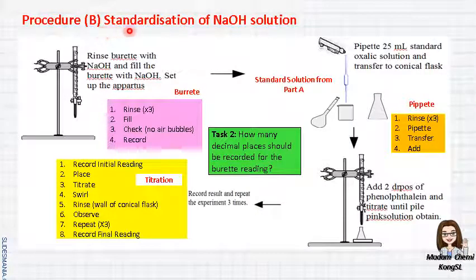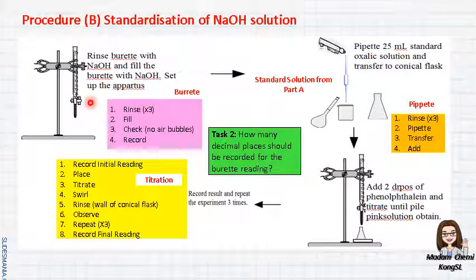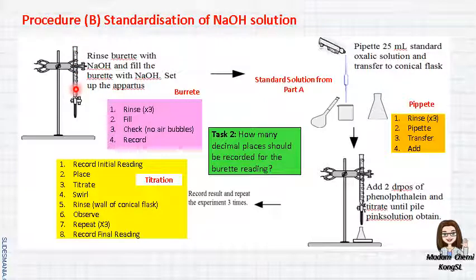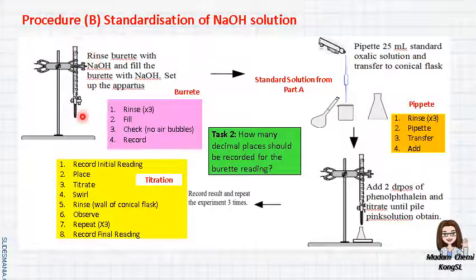Procedure B: standardization of sodium hydroxide solution. For this part, there are 10 steps from the lab manual. To summarize: first, make sure that you rinse the burette with three solutions — tap water, then distilled water, and then sodium hydroxide. After that, you fill in the sodium hydroxide inside the burette. Then you check if there are any air bubbles; if yes, you have to discard all the air bubbles before you start the experiment. Then record the initial reading of the burette. Make sure you know how to read the scale of the burette. The initial reading does not necessarily start with 0.00 — it can be 0.10, 0.20, or 1.25, and so on.